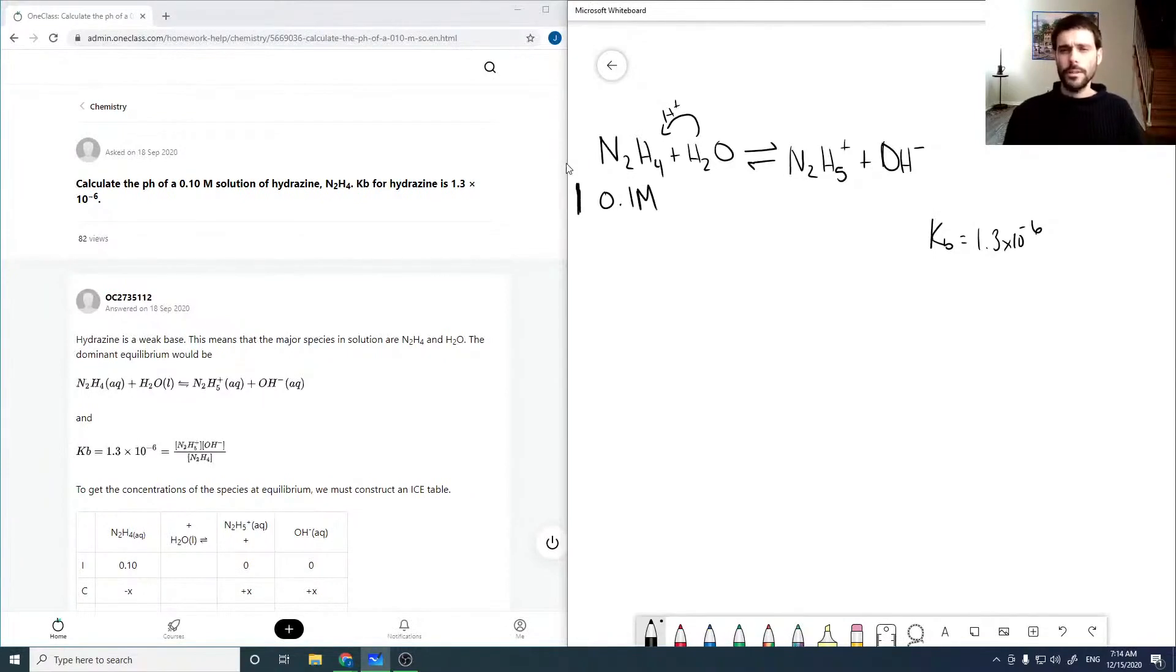So we can make our ICE table, and so we're going to have a minus x here, an x, and an x here. So our change is going to be minus x in hydrazine and plus x in both of these. And our equilibrium then is going to be 0.1 minus x, x, and x.